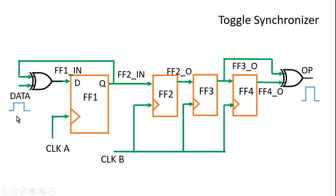So with the help of a pulse on the data signal, we have changed the logic level at the output of flip-flop 1 — previously it was logic 0 and now it is logic 1. When the next pulse comes on the data signal, the output of flip-flop 1 will become logic 0 again.